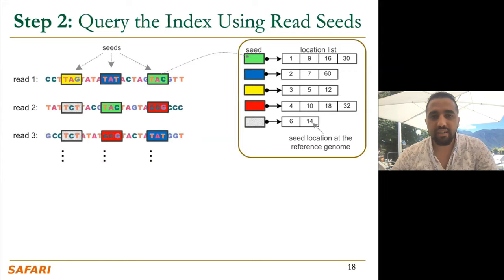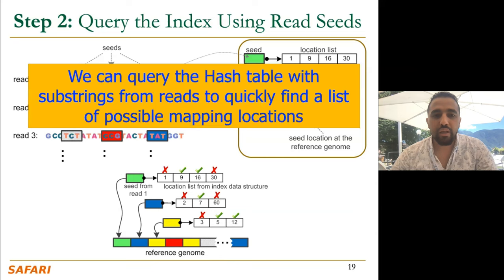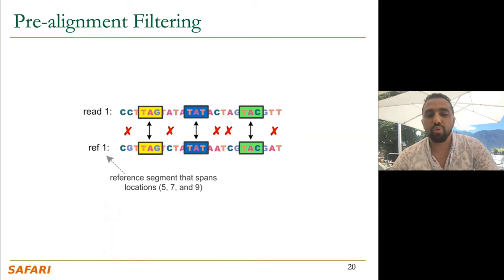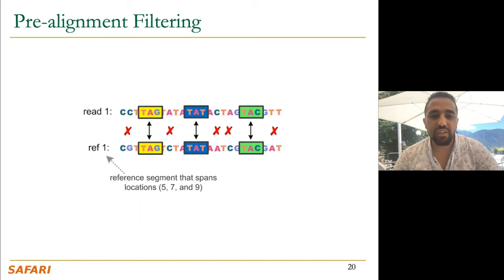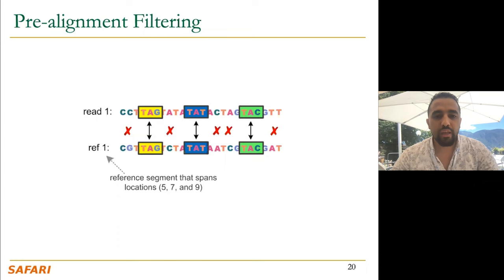The next step is seeding, where you use the exact same method used for indexing but apply it to the read. You extract some seeds, then get their locations by querying the index — the hash table. You then make sense of the locations from the index data structure by sorting them and trying to build a chain out of them. You may do some seed filtering, then perform sequence alignment, which is a dynamic programming algorithm that tells you the exact location, the number of edits, and their type — whether insertion, deletion, or substitution.